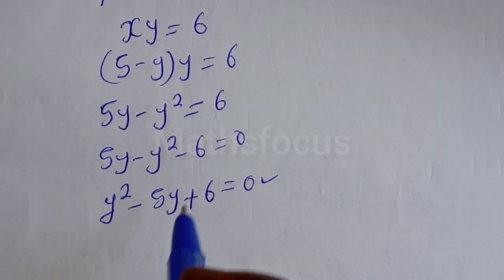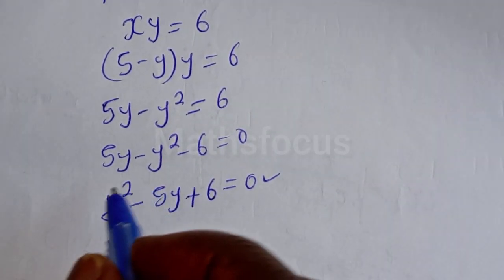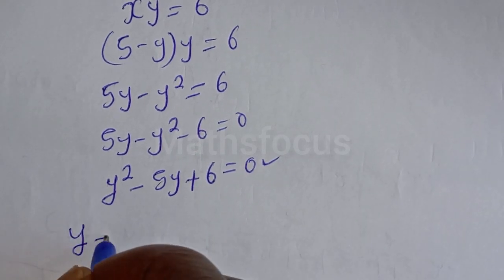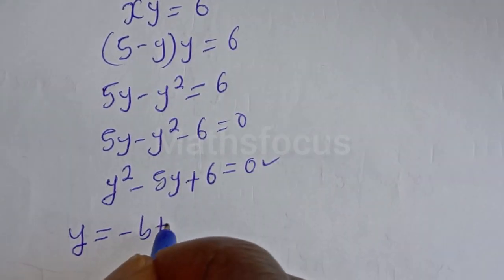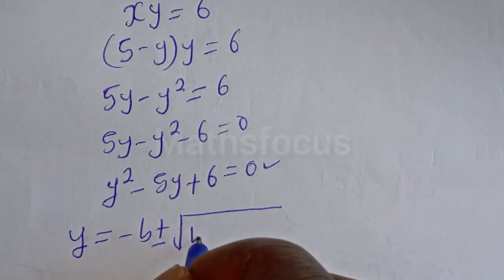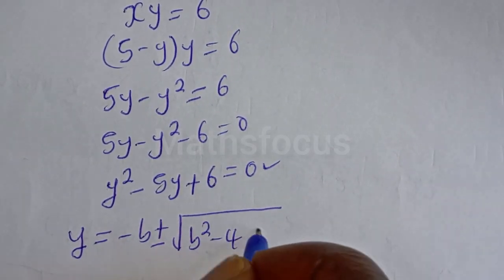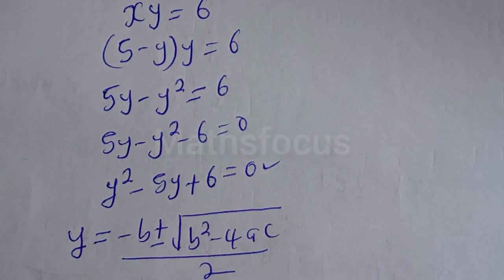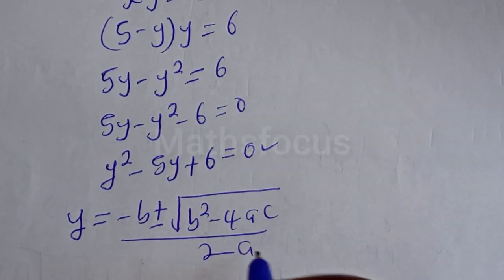Let's solve this using the quadratic general formula. The quadratic general formula gives us Y is equal to minus B plus or minus the square root of B squared minus 4AC, all over 2A.